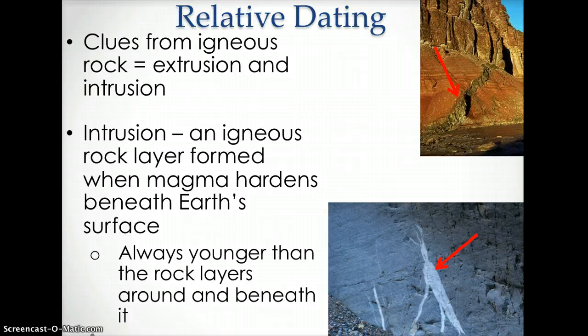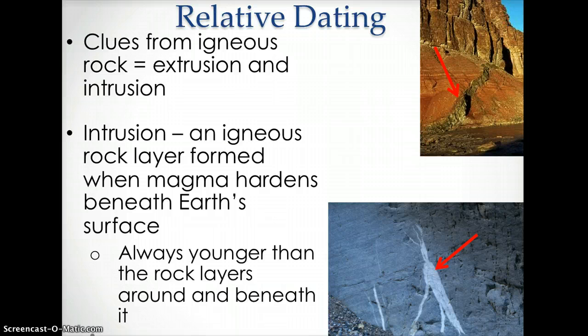Another clue that scientists use is intrusions. Intrusions are igneous rock layers formed when magma hardens beneath Earth's surface. An intrusion is always younger than the rock layers around and beneath it. The images demonstrate intrusions — the arrow points to the intrusion. A hint to remember this is that an intrusion is in rock.